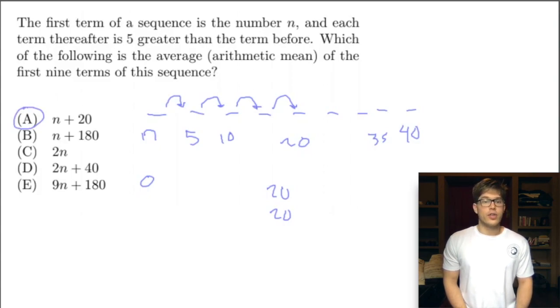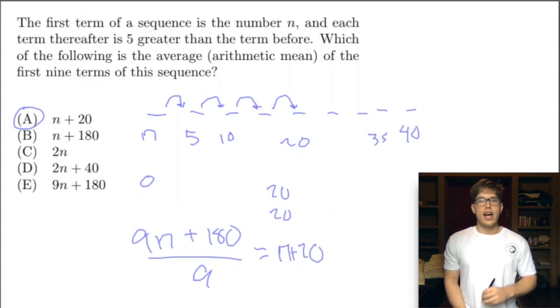You can go ahead and add everything up. We have 5 plus 10 plus 15 plus 20, et cetera, and whenever we do that, I believe we'll get 9n because we have an n in each term plus 180. Then you would divide by 9, these nines cancel, 180 divided by 9 is 20, and so you're left with n plus 20. You're going to get the correct answer A regardless, but I want to point out these little tricks, these little tips so that you can go faster, because I really do think the hardest thing about the SAT is the time.